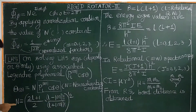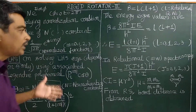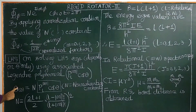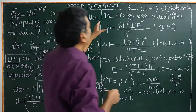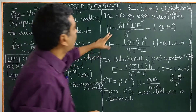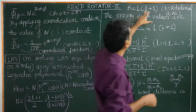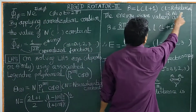On substituting M into this expression, you get the normalized wave function for theta. We have now obtained the total wave function psi, which is the product of theta and phi — also called spherical harmonics. By solving the left-hand side equation, we also obtain beta equal to L times (L plus 1), where L is the rotational quantum number.